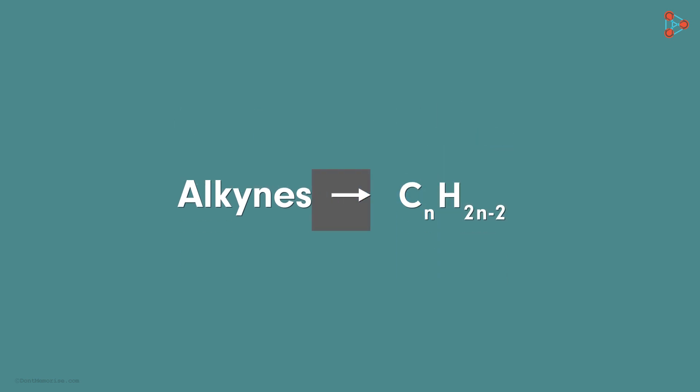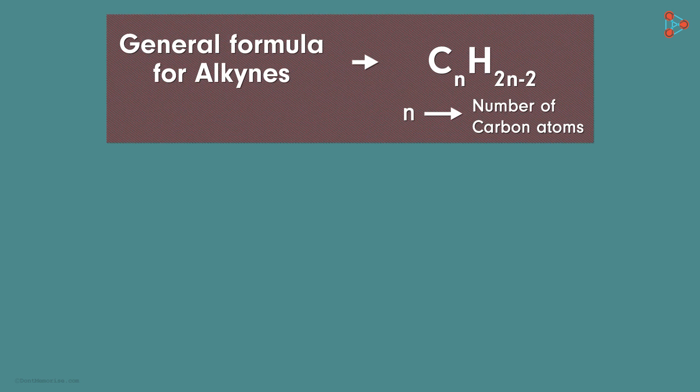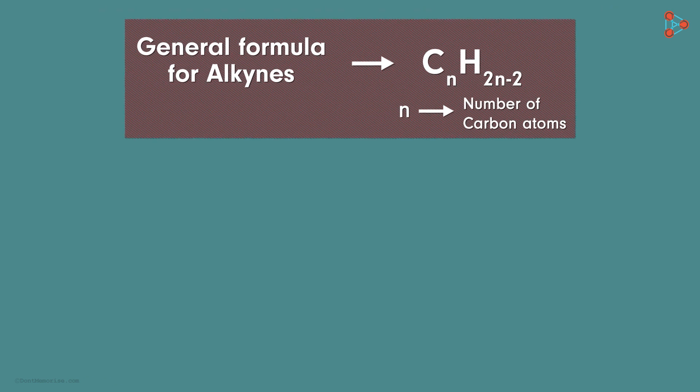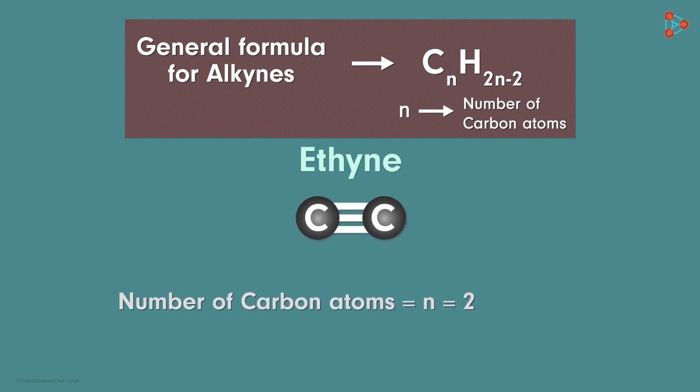Now let's take an example to understand the working of this formula. We consider the simplest alkyne, ethyne, as our example. It has two carbon atoms that share a triple covalent bond. As it has two carbon atoms, the value of n will be 2.